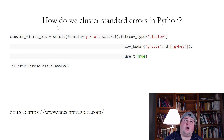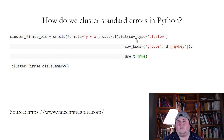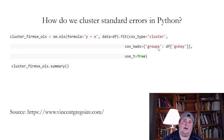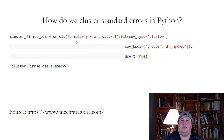So what's the code to do this in Python? You create a model, and then you specify covariance type as cluster, covariance keywords as groups, and the group as gvkey if your firm identifier is gvkey. Or if you want to do it by time, you would put year or month — whichever time unit you want to use. That's how you cluster your standard errors in Python.